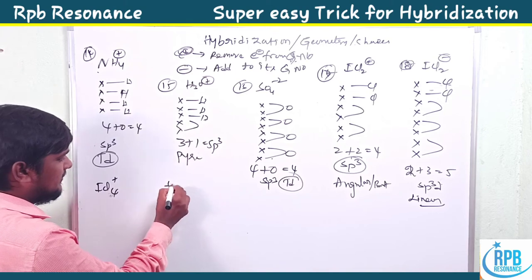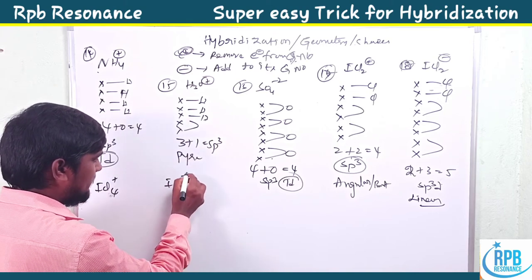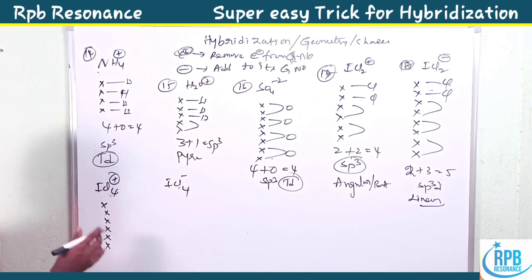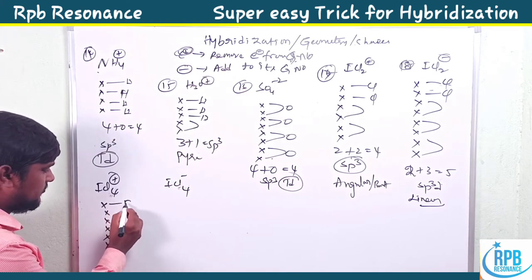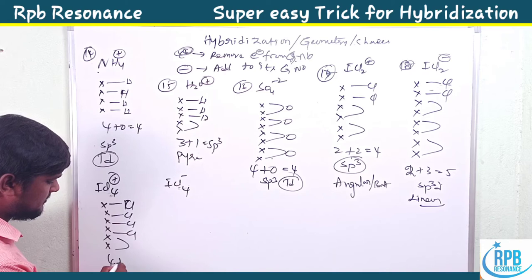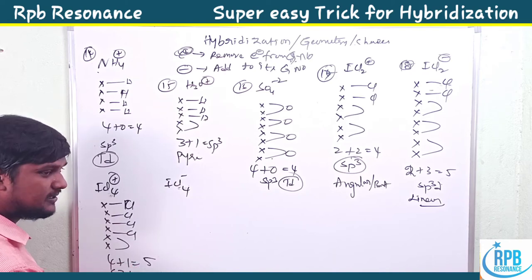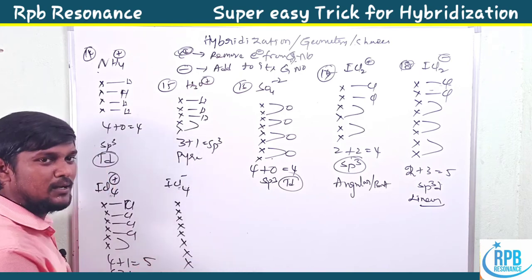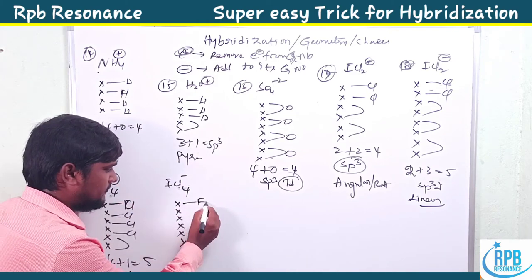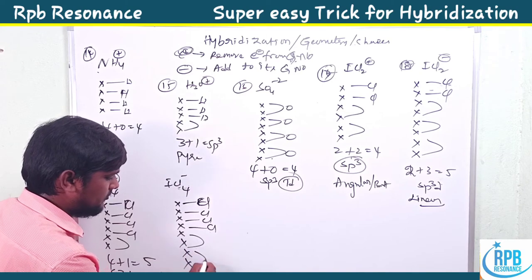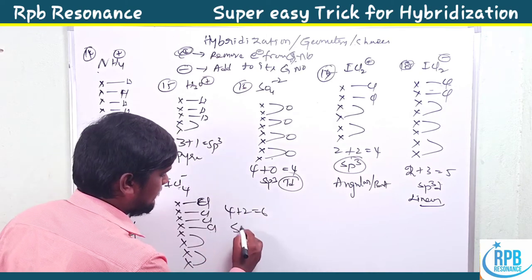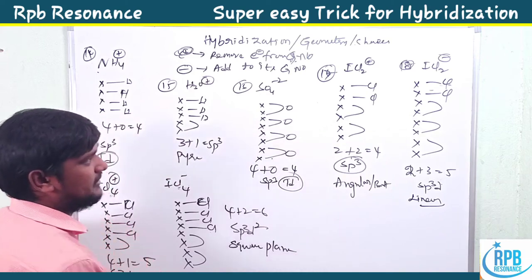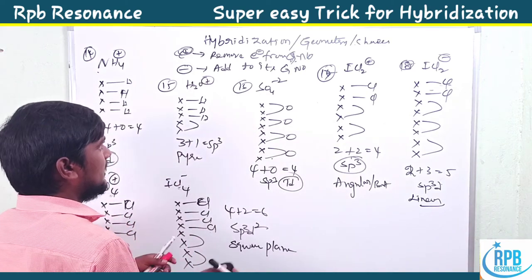For ICl5 with a cation (ICl4+), iodine's group number seven minus one gives six. Five chlorines and one lone pair: four plus one equals five — sp3d hybridization, seesaw shape. For ICl4⁻, iodine's group number seven plus one gives eight. Four chlorines and two lone pairs: four plus two equals six — sp3d2 hybridization, square planar.